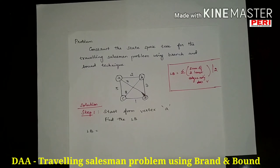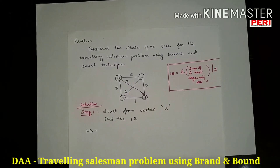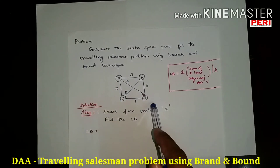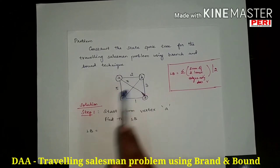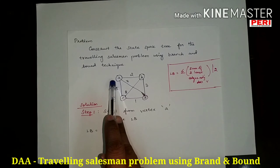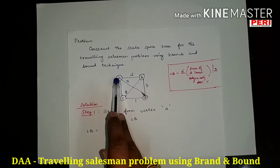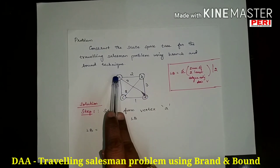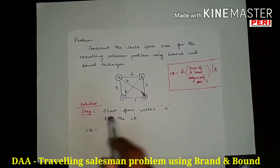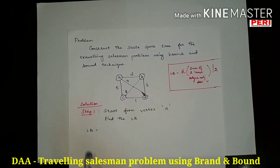The problem is: construct a state space tree for the Traveling Salesman Problem using Branch and Bound technique. They give you a weighted graph with four cities — vertices A, B, C, and D — where the numbers on the edges represent travel costs. The goal is to start from vertex A, visit every vertex exactly once, and return to A, such that the total travel cost is minimum.